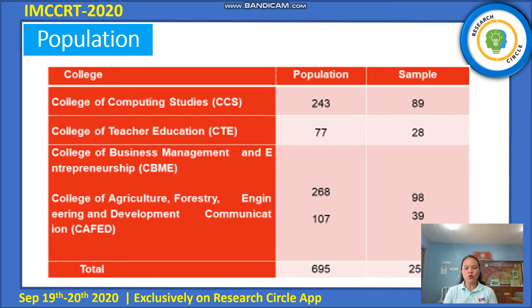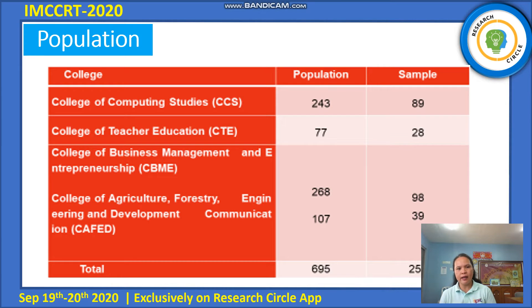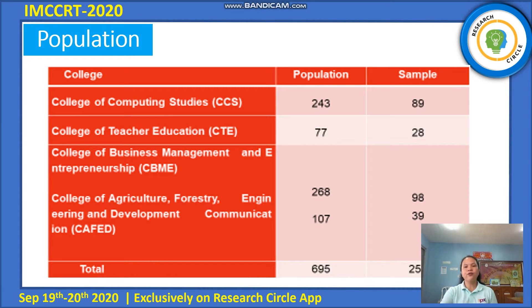The table shows the population and the number of samples taken from each college. From the College of Computing Studies: 89; from the College of Teacher Education: 28; College of Business Management and Entrepreneurship: 98; and from the College of Agriculture, Forestry Engineering and Development Communication: 39, with a total of 254 respondents.